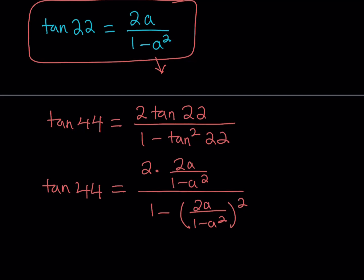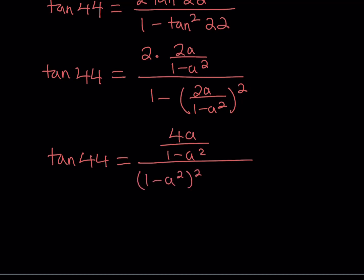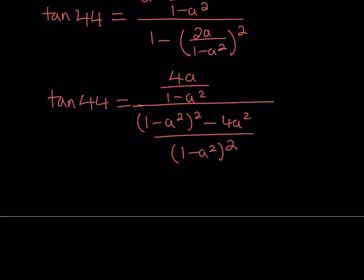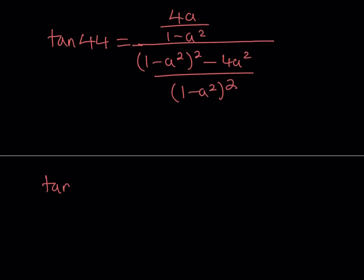Let me go ahead and simplify this. The numerator becomes 4A over 1 minus A squared. For the denominator, squaring 2A over 1 minus A squared gives a quotient of squares. Making a common denominator with (1 minus A squared) squared, the denominator becomes (1 minus A squared) squared minus 4A squared, all divided by (1 minus A squared) squared. We have a complex fraction — a fraction in the numerator and a fraction in the denominator — so we flip the second one and multiply.